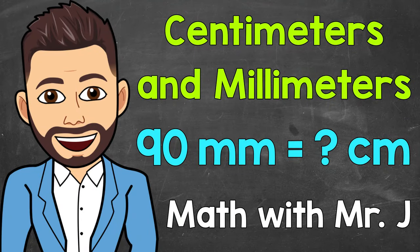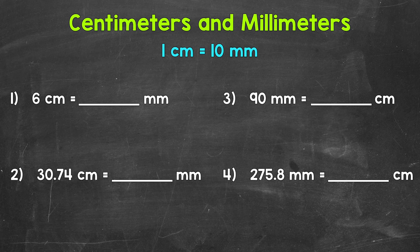Welcome to Math with Mr. J. In this video, I'm going to cover how to convert between centimeters and millimeters — centimeters to millimeters and millimeters to centimeters. One thing to keep in mind: 1 centimeter equals 10 millimeters. We need this information in order to convert.